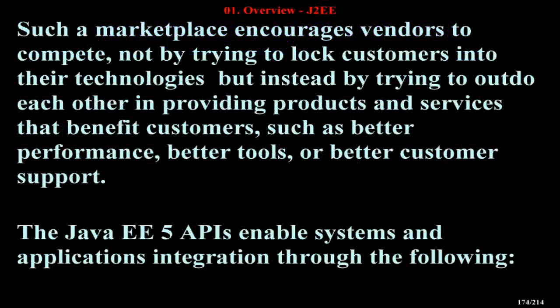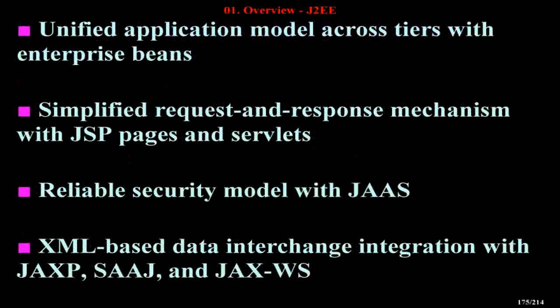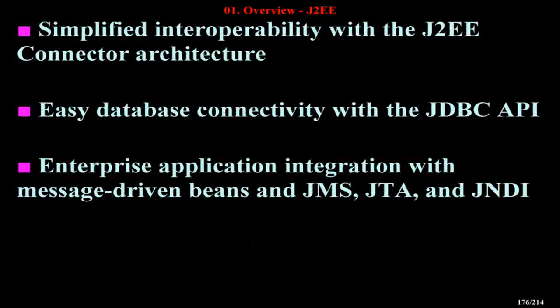The Java EE 5 APIs enable systems and applications integration through the following: unified application model across tiers with Enterprise Beans; simplified request and response mechanism with JSP pages and servlets; reliable security model with JAAS; XML-based data interchange integration with JAXP, SAAJ, and JAX-WS; simplified interoperability with the J2EE Connector Architecture; easy database connectivity with the JDBC API; and enterprise application integration with message-driven Beans, JMS, JTA, and JNDI.